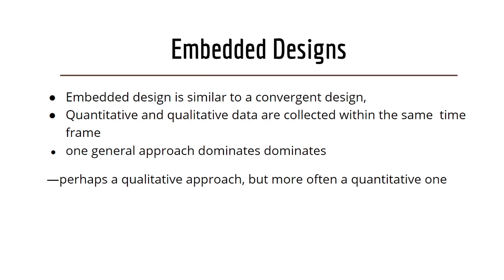For example, when planning a large-scale survey of people's attitudes or opinions about a controversial topic, a researcher might create a series of statements with which participants either agree or disagree along a rating scale continuum. Within this general quantitative instrument, the researcher could embed several open-ended items in which participants explain their ratings. Such qualitative data could help the researcher make better sense of the numerical findings.